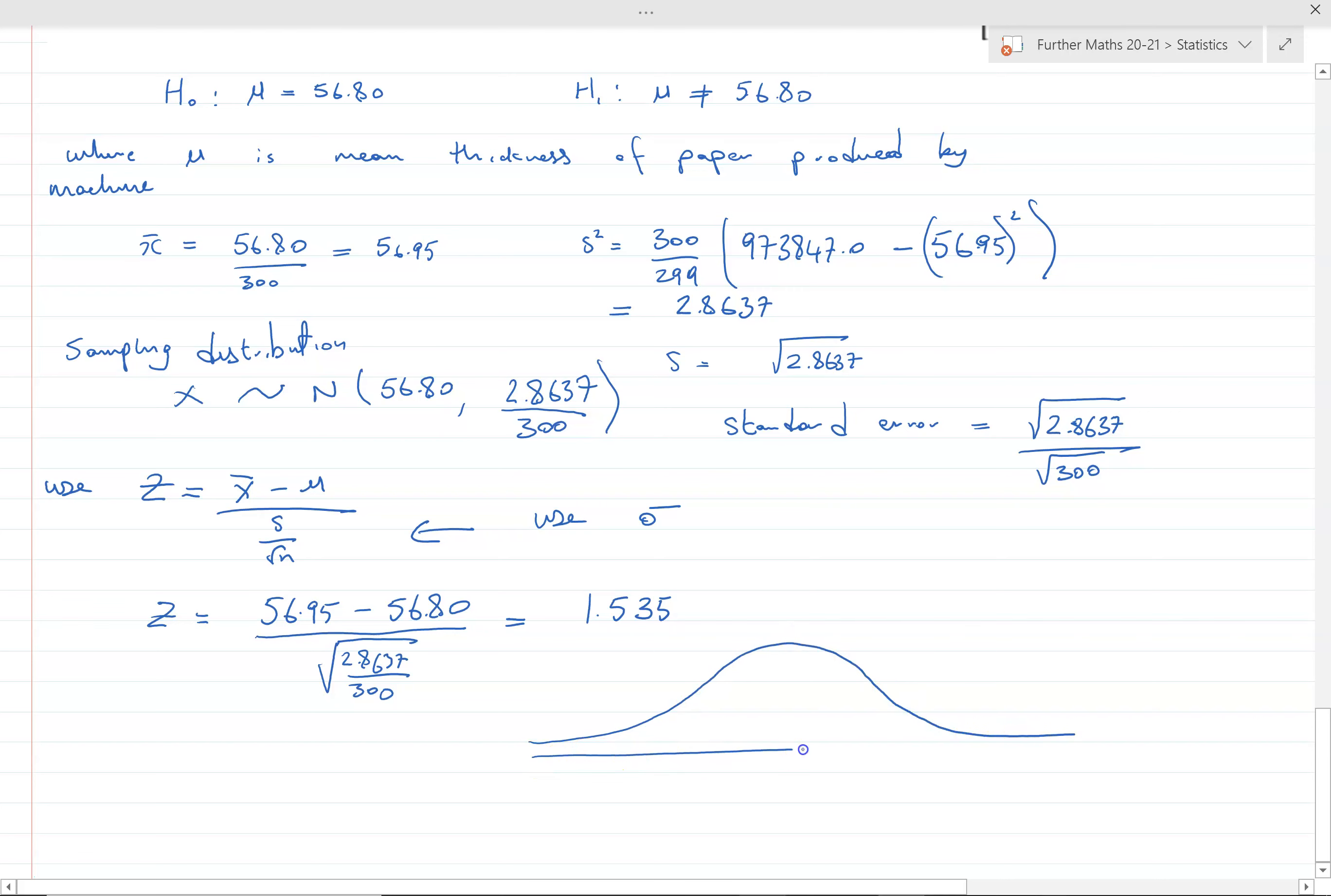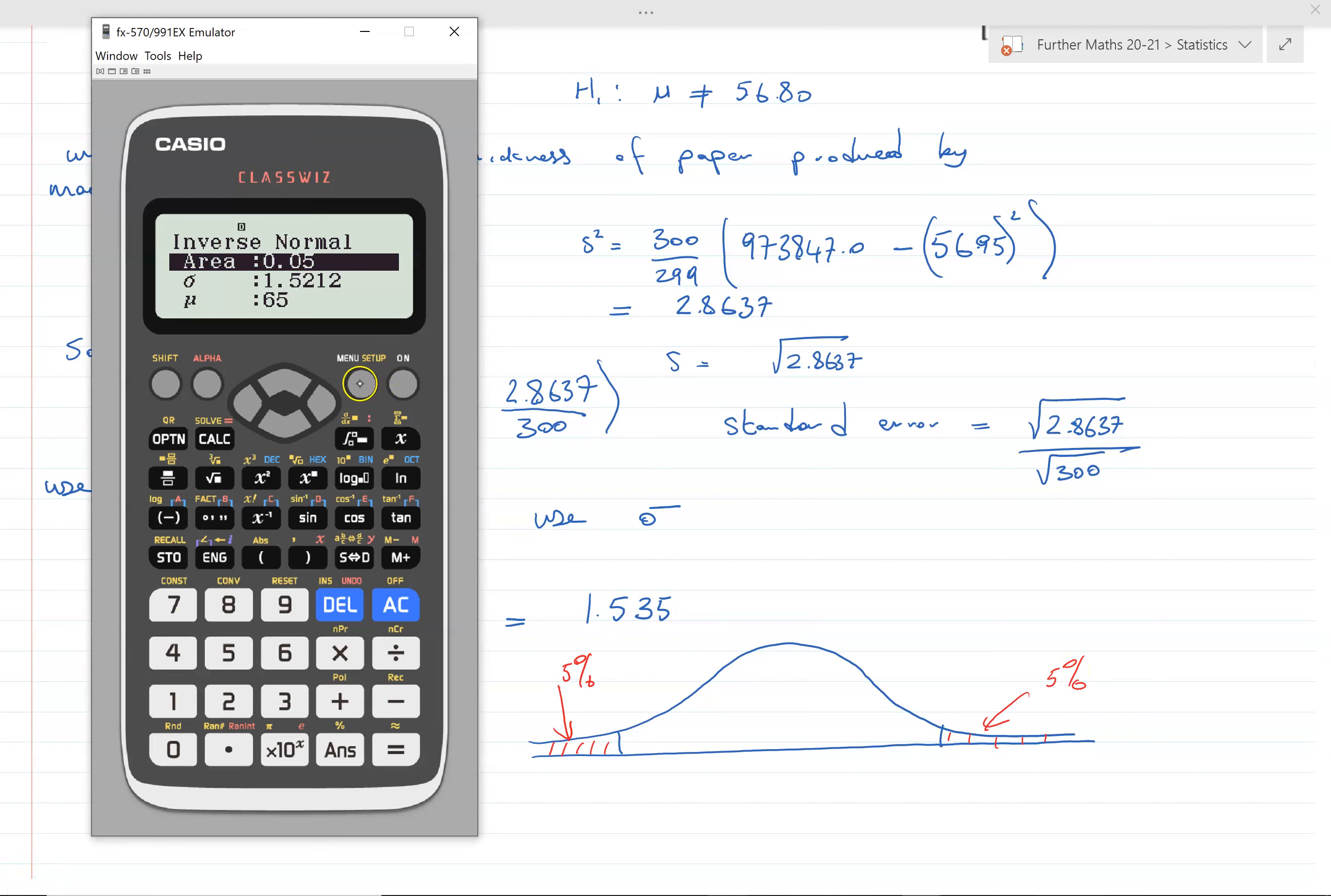I always like to draw the standard normal distribution and shade in the region and find the values. We're two-tailed here so we want 5% each side. I'm going to use the calculator to work out the critical values for z.